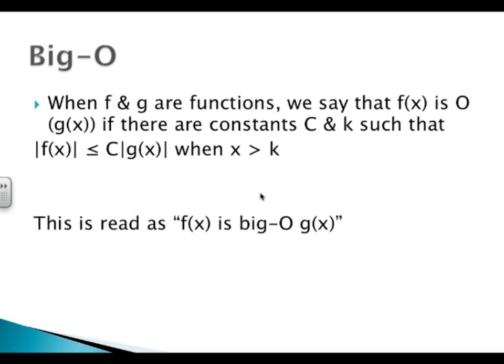Let's start with Big O notation. We have two functions, f and g. We say that f of x is Big O of g of x. There are constants c and k such that the absolute value of f of x is less than or equal to c times the absolute value of g of x, when x is greater than k.